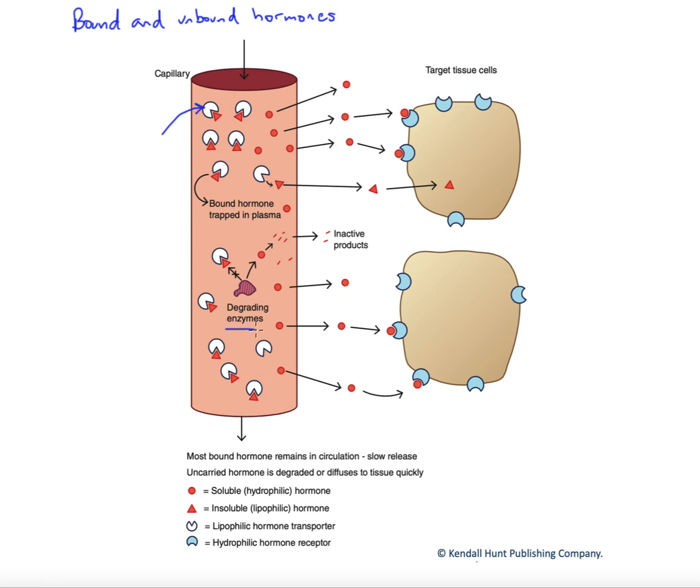There are enzymes that help regulate the presence of particular hormones so that they don't have effects that are more prolonged than desirable. But as you can see, our protein binding here is helping protect this lipophilic hormone. Much of the lipophilic hormone is actually continuing through the capillary, and only a very small component of it actually diffuses out into the interstitium to cause an action.